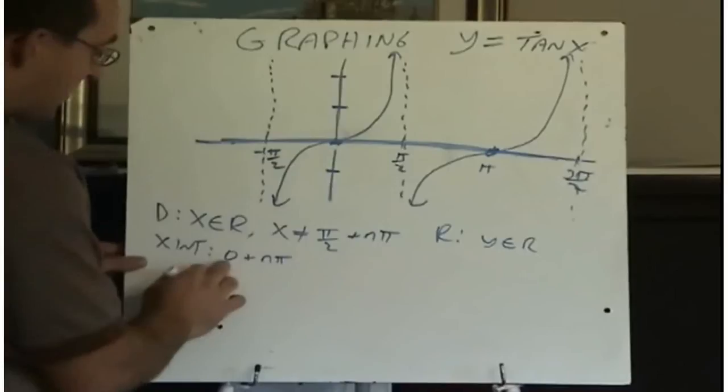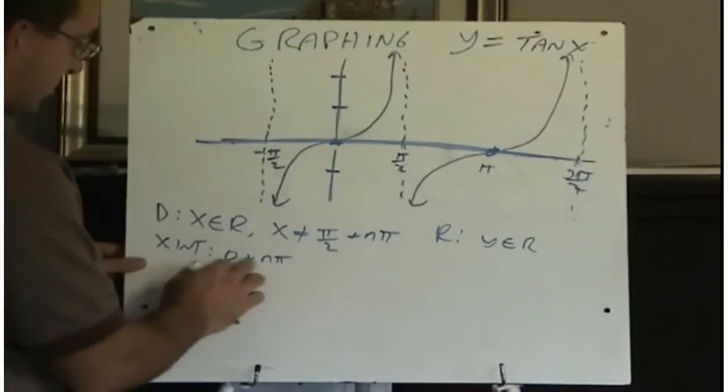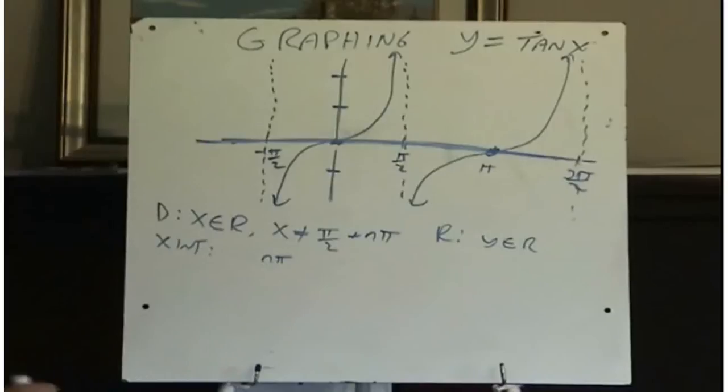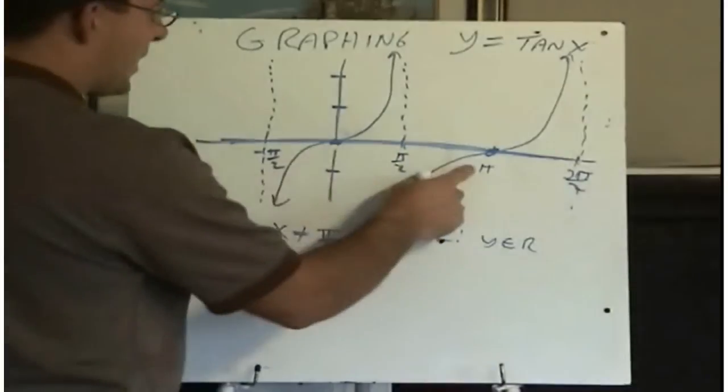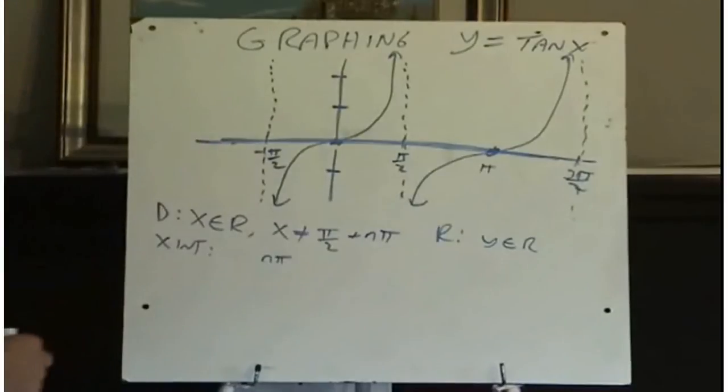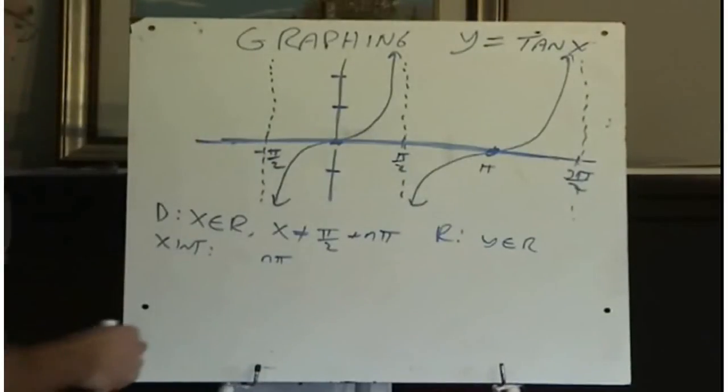Technically, we don't even need to write the zero, because zero plus this will just be that. So we can just simplify that and say it's any multiple of pi. It's zero pi, one pi, two pi, three pi, four pi, minus one pi, minus two pi. The x-intercept is n pi.